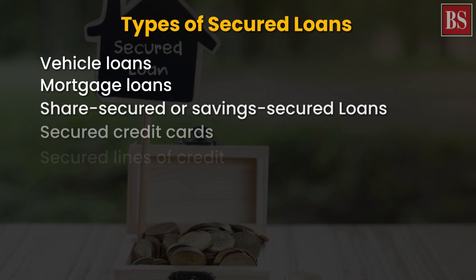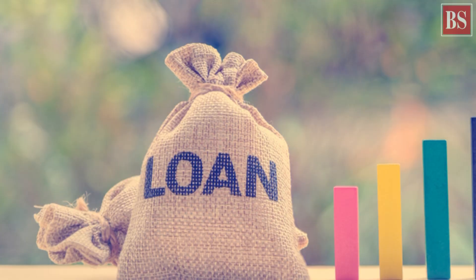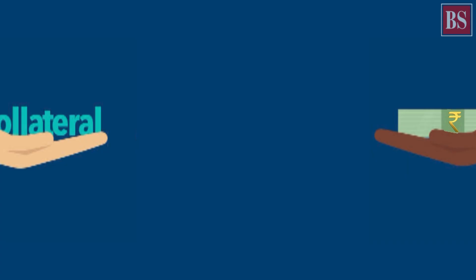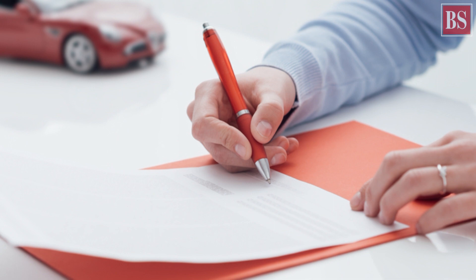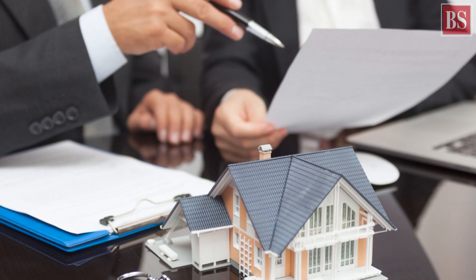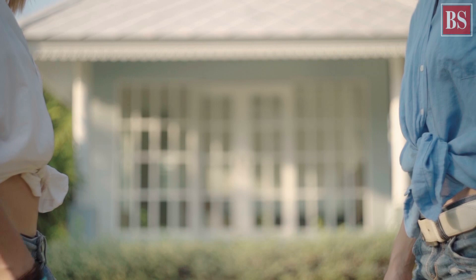On the other hand, in secured loans, the borrower is required to keep an asset as surety or collateral to borrow money. Simply put, collateral is an item of value that a lender can seize from a borrower if he or she fails to repay a loan according to the agreed terms. One common example is mortgage loans.